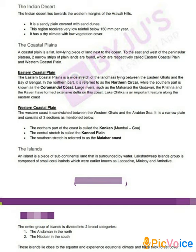Coastal Plains. A coastal plain is a flat, low-lying piece of land next to the ocean. To the east and west of the peninsular plateau, two narrow strips of plain land are found, which are respectively known as the eastern coastal plain and the western coastal plain. So the plain near to the ocean is known as coastal plain.